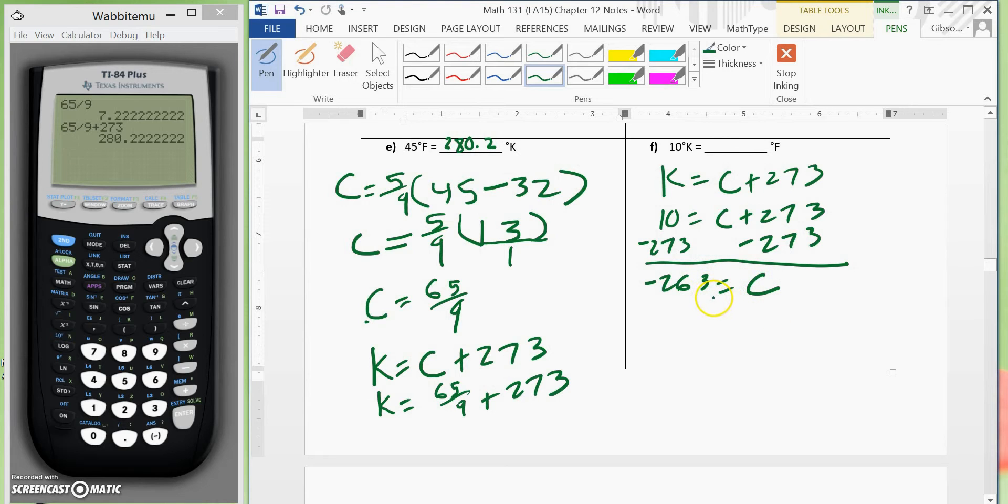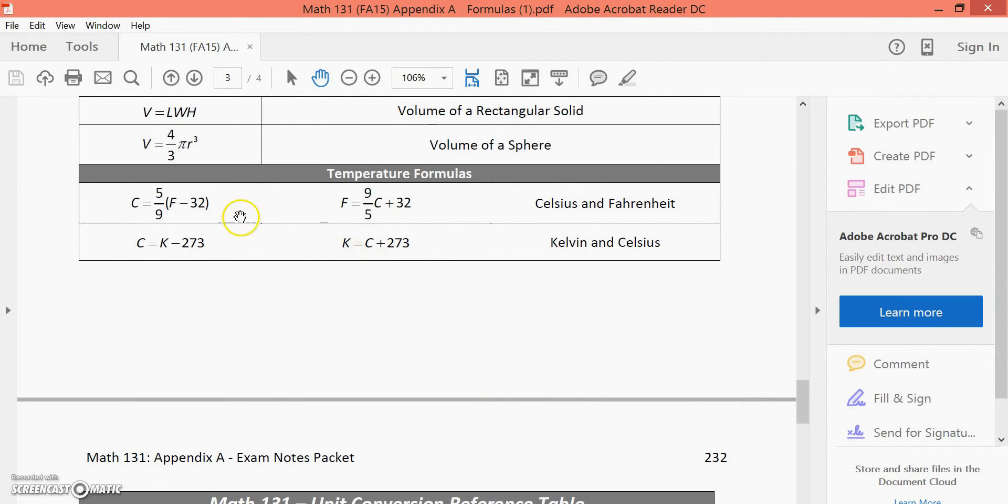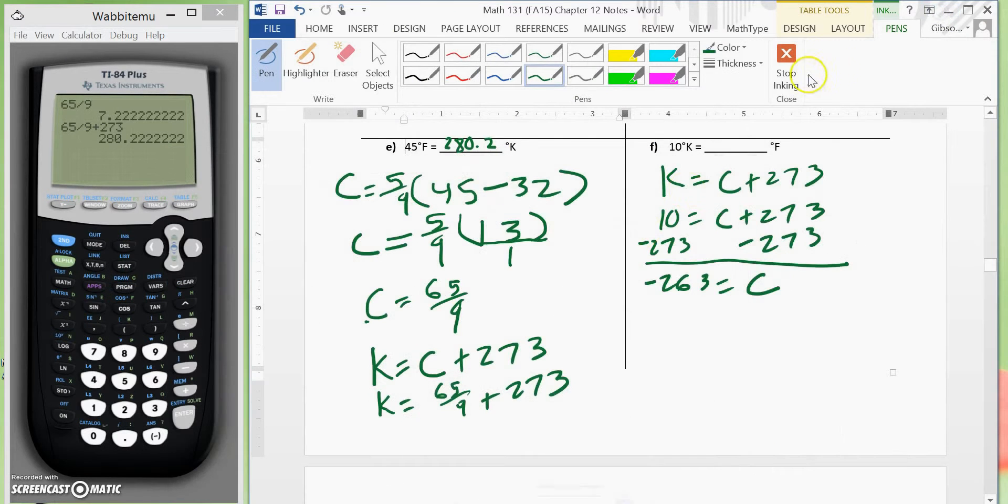Okay, so now what we need to do next is this here. We want to get Fahrenheit. So we will use the Fahrenheit formula just like I had showed you all before on this sheet here. We can see here Fahrenheit is 9 fifths Celsius plus 32.